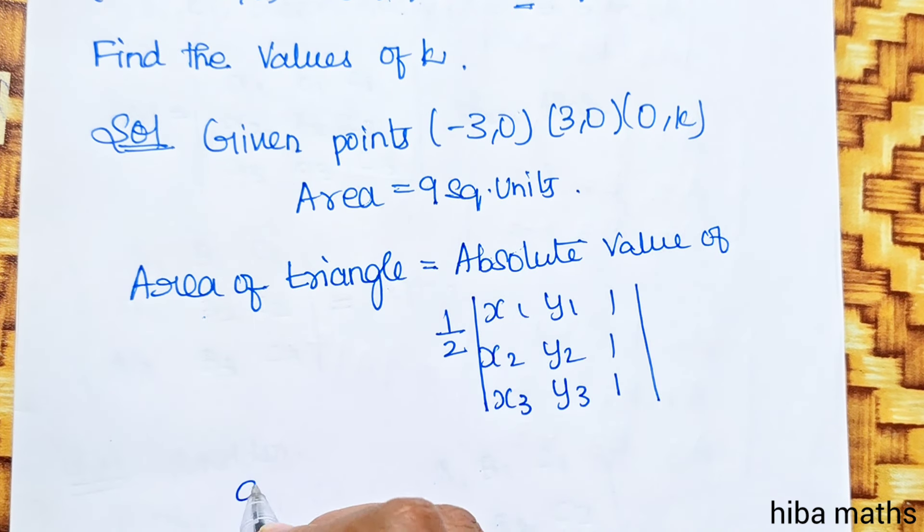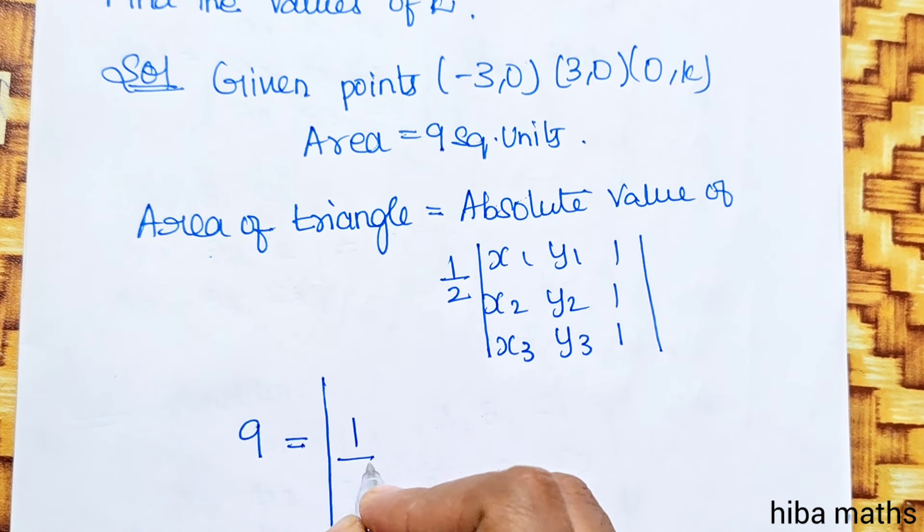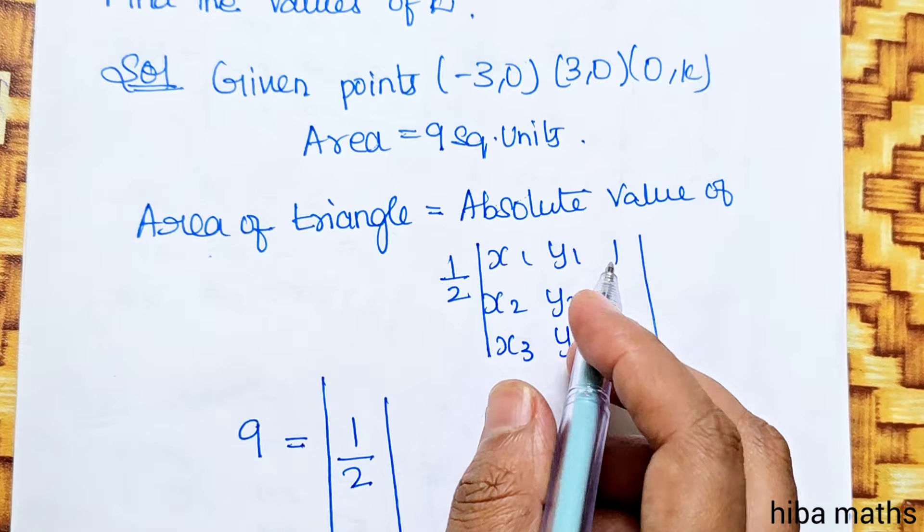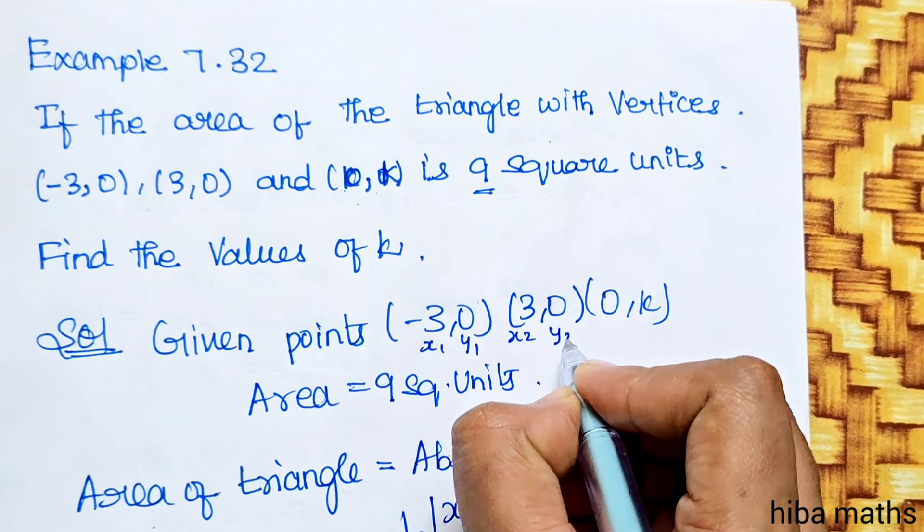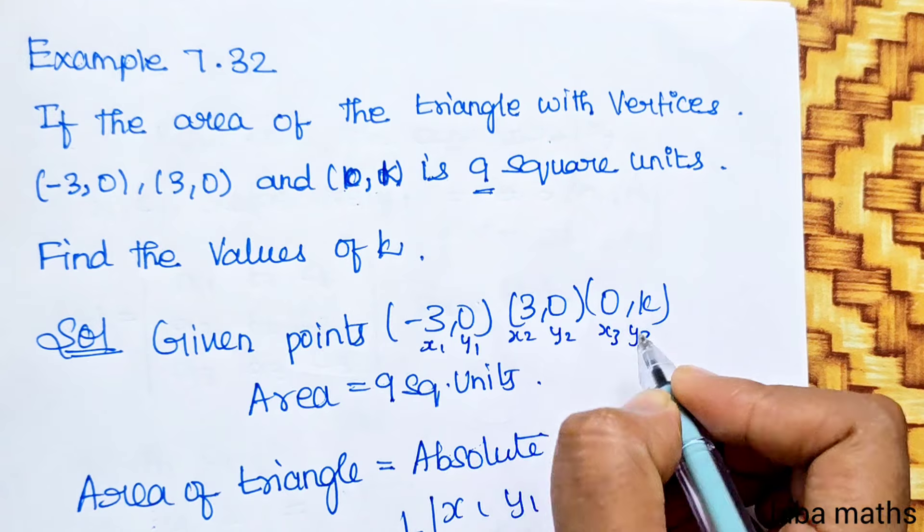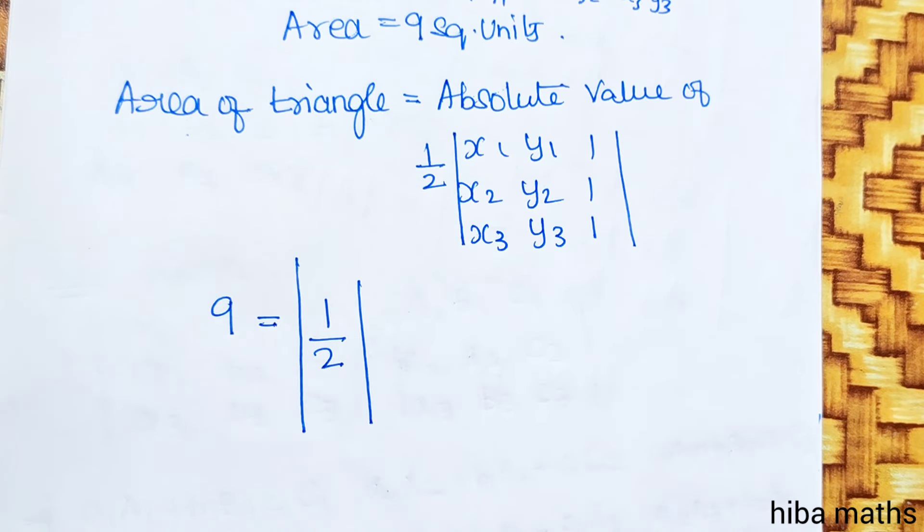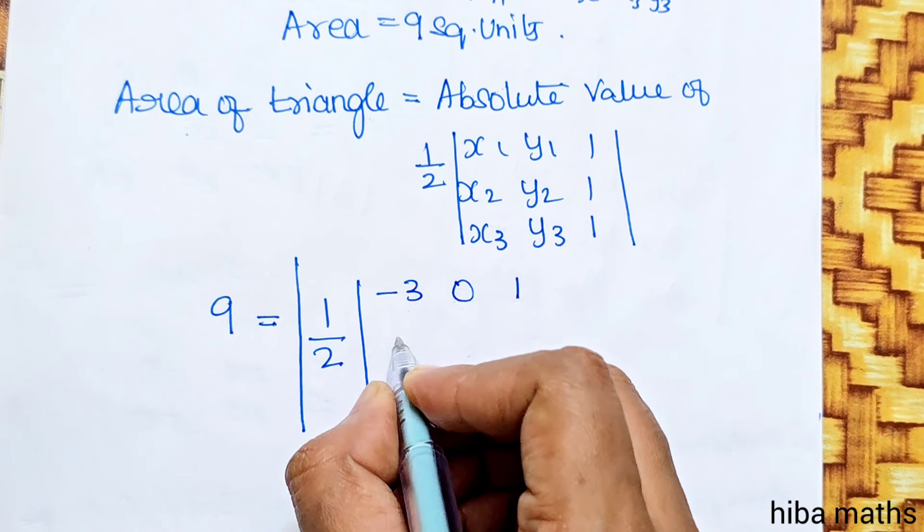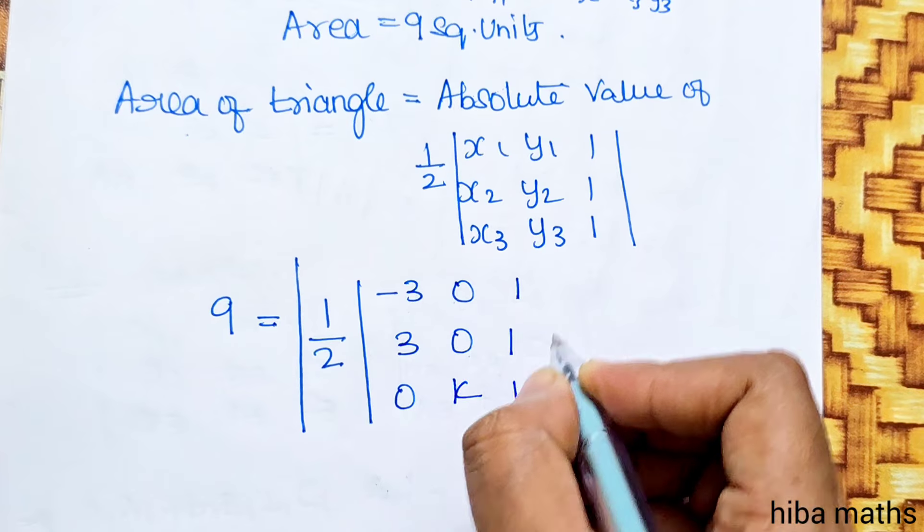The formula applied: 9 equals absolute value of 1/2 times the determinant. x1 is -3, y1 is 0, so we have -3, 0, 1; then 3, 0, 1; then 0, k, 1.